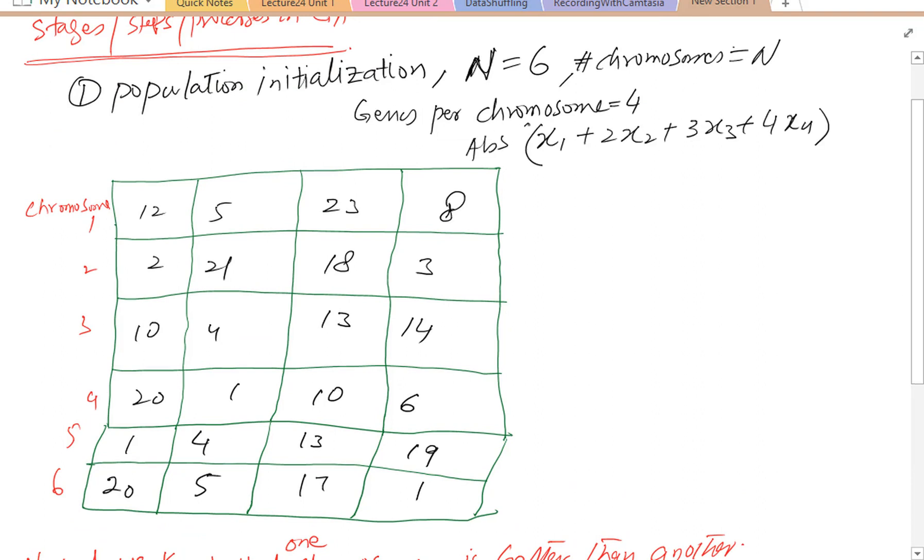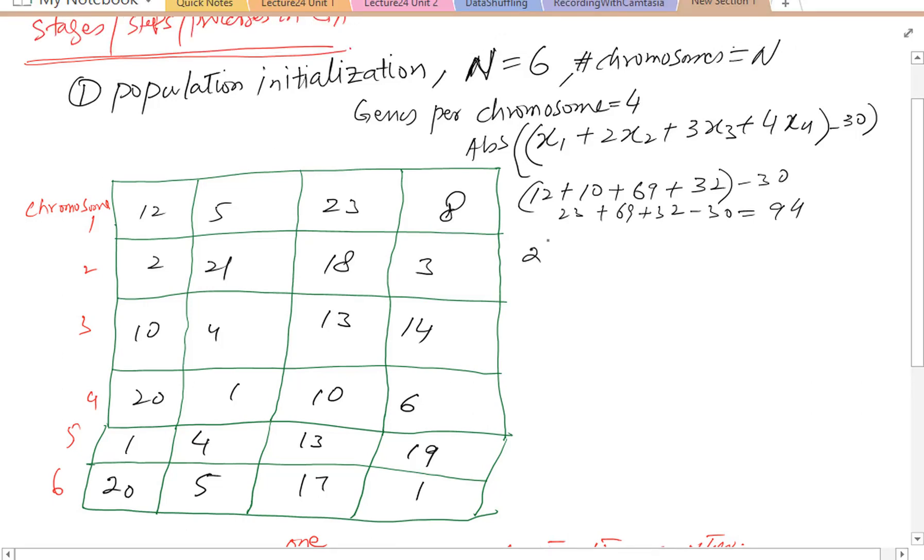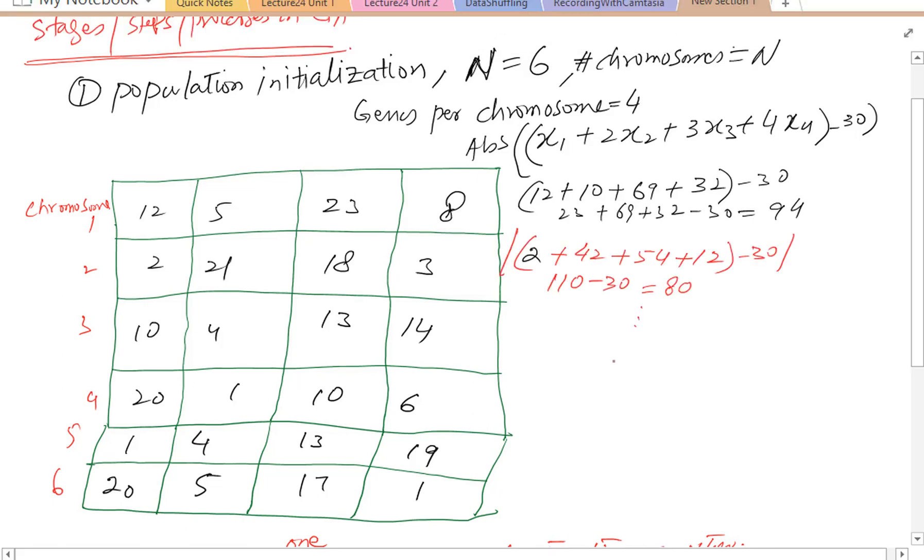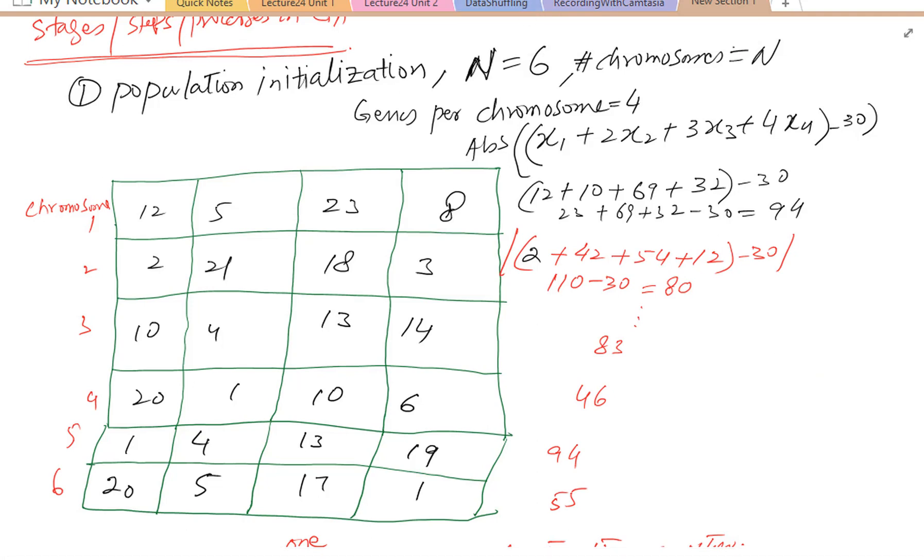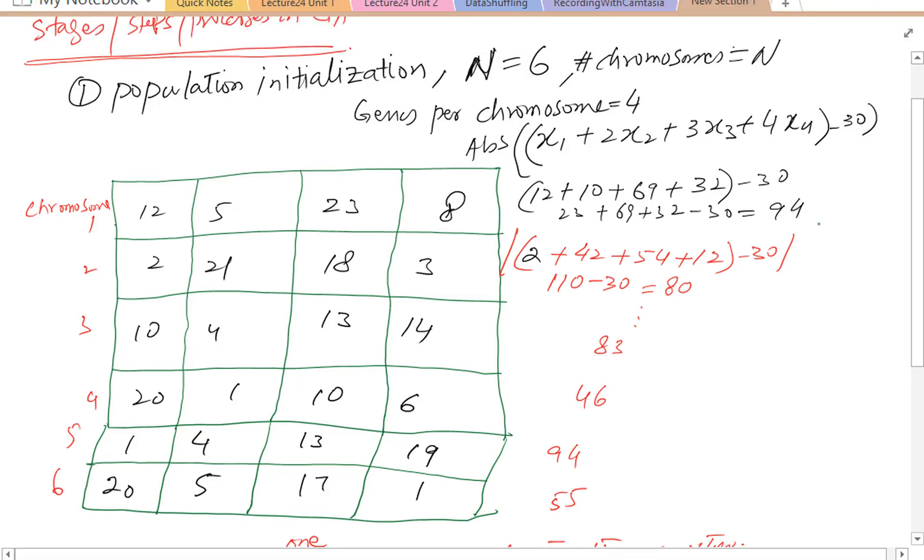Let's compute the fitness quantity. Rewriting the function of X, solving the above equation for chromosome 1 yields 94. Similarly, for the second chromosome, we get 80. Continuing for the other chromosomes, we get 83, 46, 94 and 55 as the fitness values.